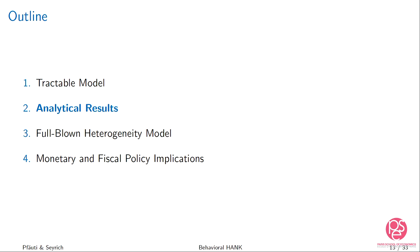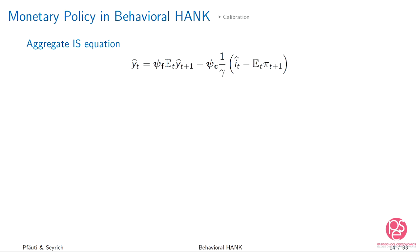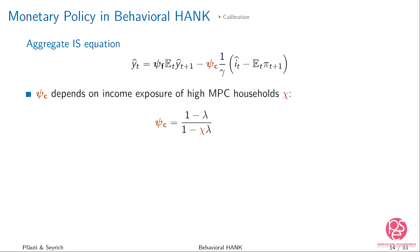Moving to the aggregate IS equation, we combine the two key equations and aggregate consumption across the two household types. The IS equation looks standard at first — total output as a function of expected output tomorrow and the real interest rate — but two new coefficients appear: Psi_C and Psi_F. Psi_C tells you how sensitive output is to a change in the real interest rate for a given expected future output, and crucially depends on the income exposure of high-MPC households, chi. If chi is larger than one, we get amplification: Psi_C larger than one.